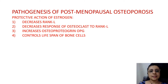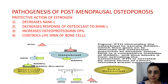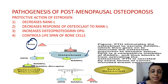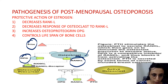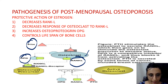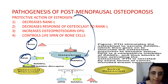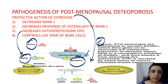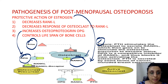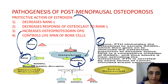Estrogen decreases RANKL and increases osteoprotegerin. As we discussed in Paget's disease, parathormone makes osteoblasts release more RANKL and decrease osteoprotegerin. Osteoprotegerin prevents osteoclast activation from RANKL — it acts as a competitive inhibitor. So estrogen decreases RANKL and increases osteoprotegerin, protecting the bone. Any deficiency of estrogen results in increased RANKL and thus increased bone resorption by activated osteoclasts.